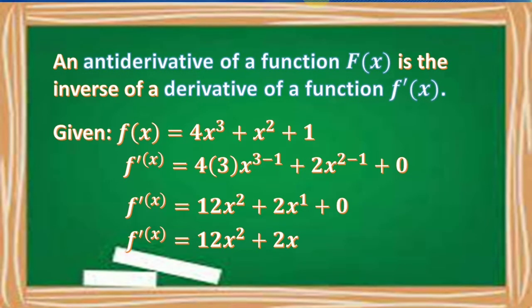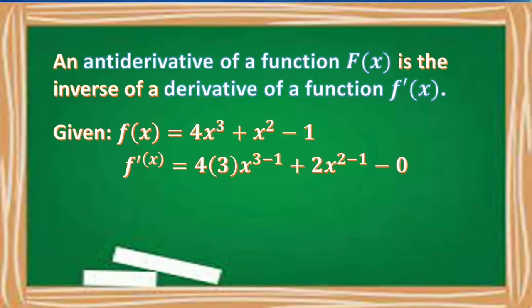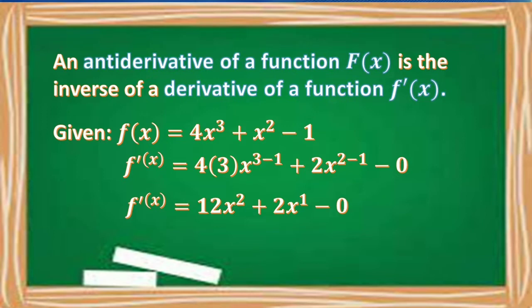But what if the constant term positive 1 in our given function is replaced by negative 1? Can we have the same result? Say if we have F of x is equal to 4x cubed plus x squared minus 1. Using the differentiation rules, we have F prime of x equal to 12x squared plus 2x. So as we have noticed, whether the constant term in our given function is replaced by any number, the derivative will remain the same because the derivative of a constant is always 0.